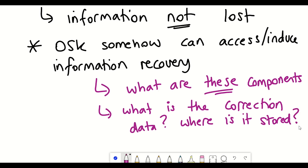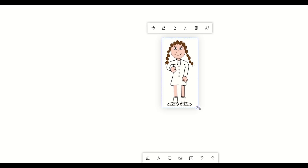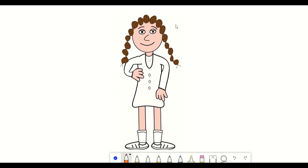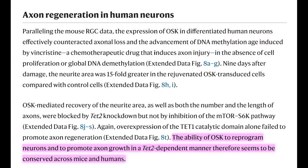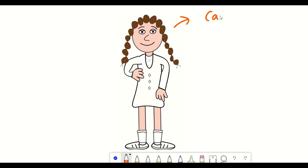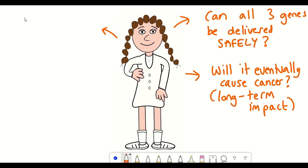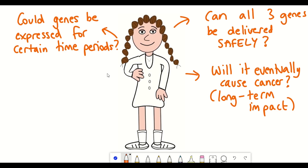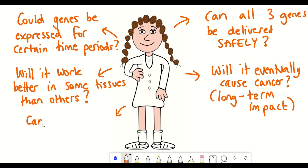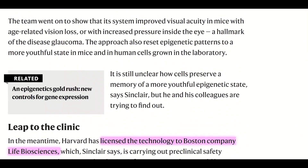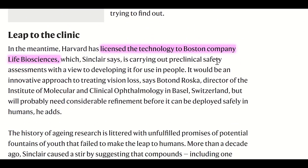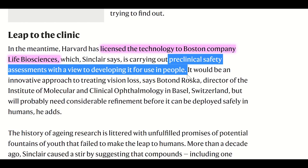The study was done in mice, but what potential does this have for humans? Whilst this study did also show that axon regeneration occurred in human neurons in culture, there are a lot of questions that still need to be addressed before further experiments on humans. For example: can all of the components be delivered safely to the right cells? Will it eventually cause cancer? Can the genes be expressed for only a short time and then switched off again to let the cells rest? Will it work better in some tissues than others? And could it be given to middle-aged people before they become sick, the same way we take statins to keep cholesterol in check to prevent heart disease? Nonetheless, Harvard have licensed the technology to Boston company Life Biosciences, which Sinclair says is carrying out preclinical safety assessments with a view to developing it for use in people.